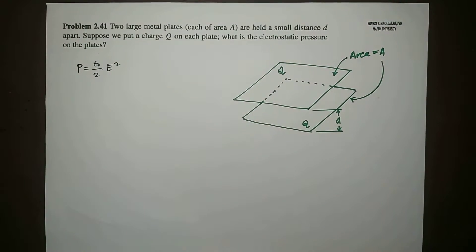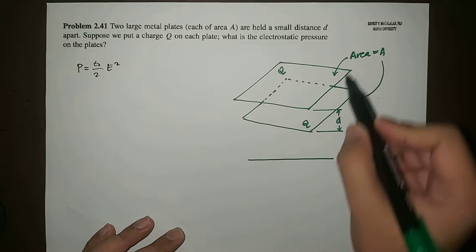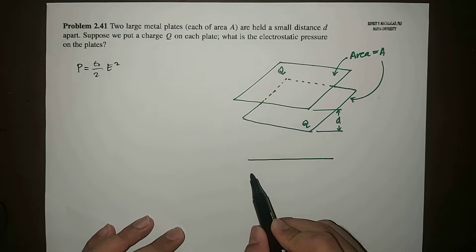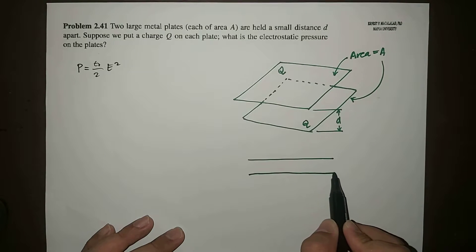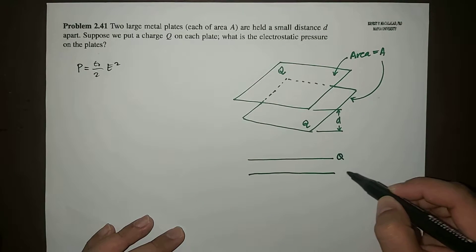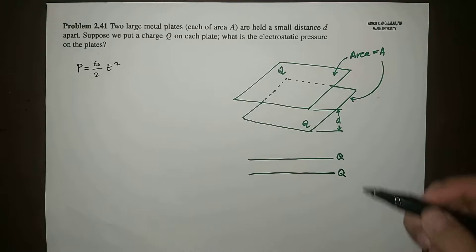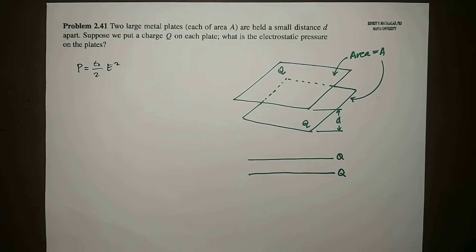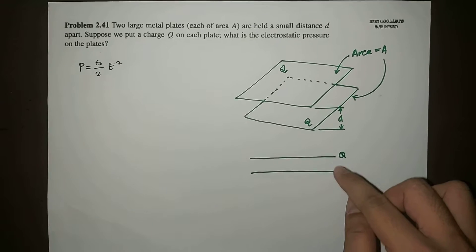This will be the upper plate and this will be the lower plate. So this is Q and this is Q, because of equal charges here.